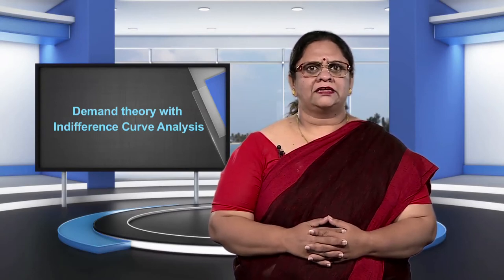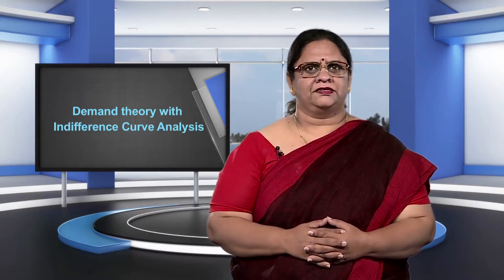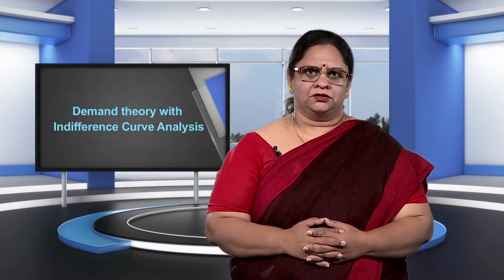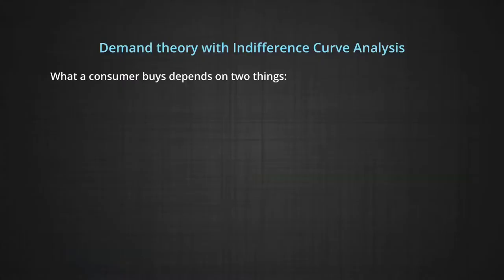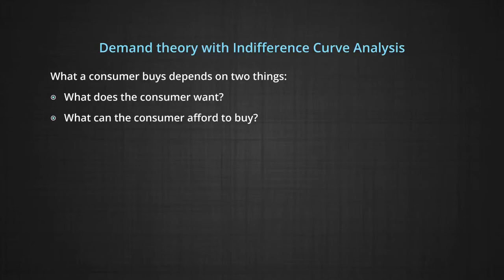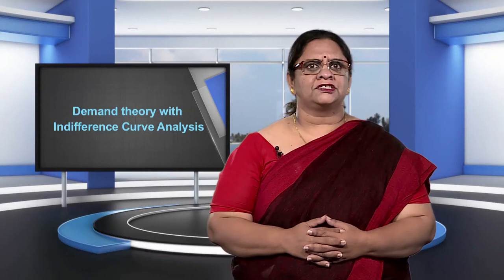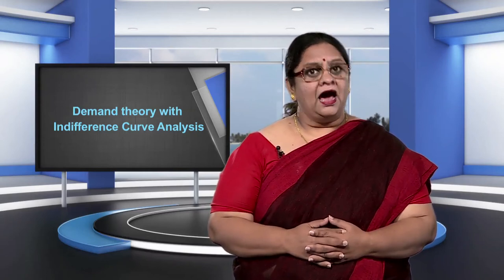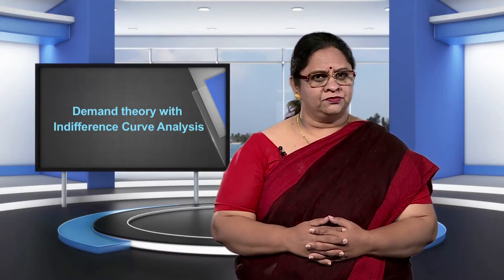Recall that consumer theory analyzes decisions made by consumers regarding what goods to buy and in what quantities to buy them. What a consumer buys depends on two things: one, what does the consumer want, and two, what can the consumer afford to buy? In this module, we examine the first question again: how does the consumer decide what to buy and how much of it to buy?